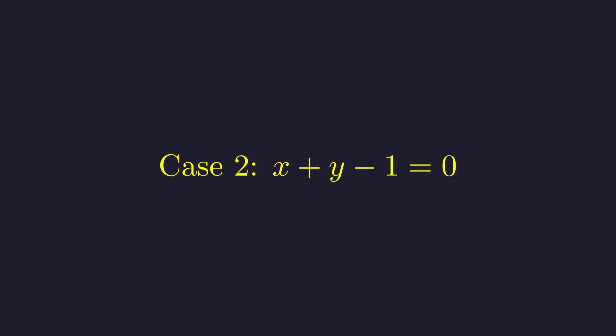Now we analyze the second case, where x plus y minus 1 equals 0. This means y equals 1 minus x. Now consider our second equation from the system, y equals 5 minus x squared. We'll substitute y equals 1 minus x into this equation. This gives us 1 minus x equals 5 minus x squared.